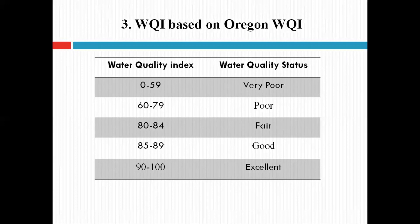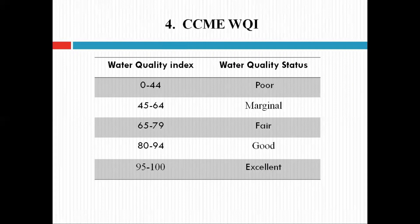Similarly with Oregon and CCME WQI, the value will fall under corresponding classes. These WQI methods differ from one another in terms of the formula used for calculation of WQI, the index class range, the water quality characteristic status, and even the parameters involved. Therefore, for WQI calculation, the choice of water parameters selected for the study totally depends on the researcher or on the Water Quality Index method adopted.